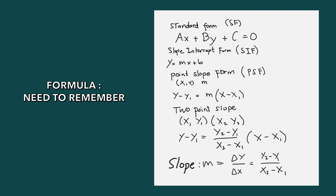The standard form — this is the formula that you need to remember. These are the formulas you need to know to write the equation of a line. The first one is the standard form, which is ax plus by plus c. When a question asks you to write the equation of a line using slope-intercept form, your answer should look like y equals mx plus b.